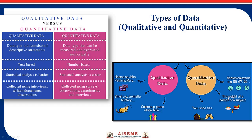Quantitative data is number-based. For example, your shoe size, weight of the person, and exam marks. Text-based data is harder for statistical analysis purposes, while number-based data is easier. Qualitative data can be collected using interviews, written documents, or observations. Quantitative data is collected using surveys, observations, experiments, etc. Both types are used in machine learning.